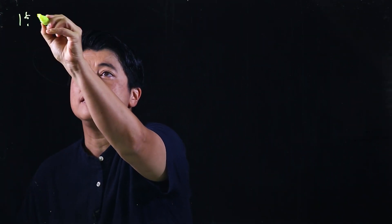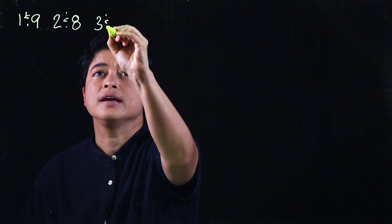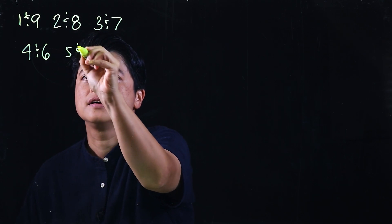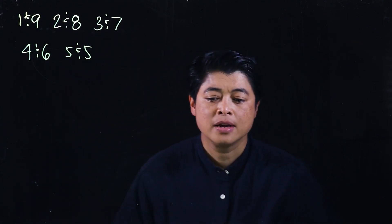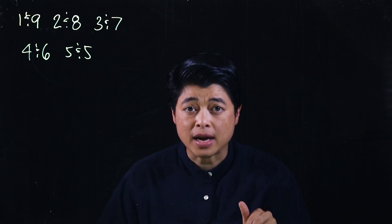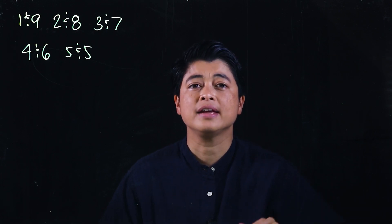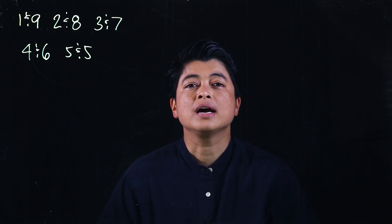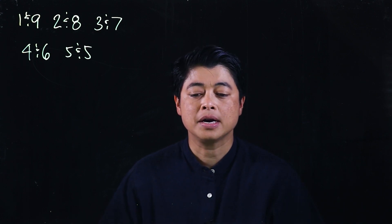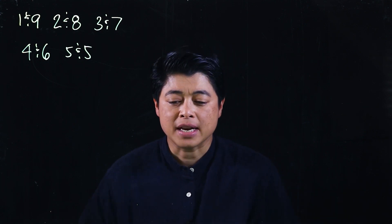I'll write them down again: 1 and 9, 2 and 8, 3 and 7, 4 and 6, 5 and 5. For computational math we do vertical written form, and for mental math it's horizontal. We're not dealing with mental math yet, but we will.